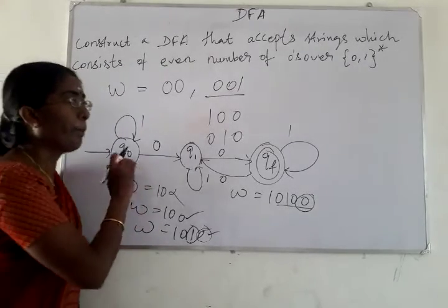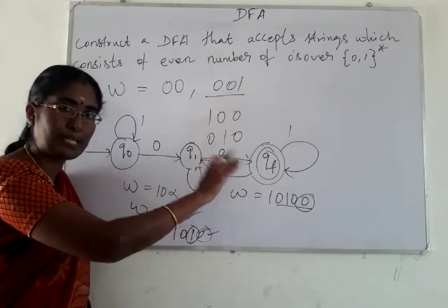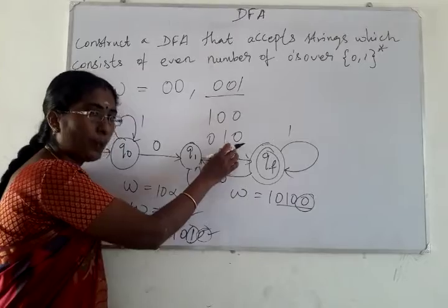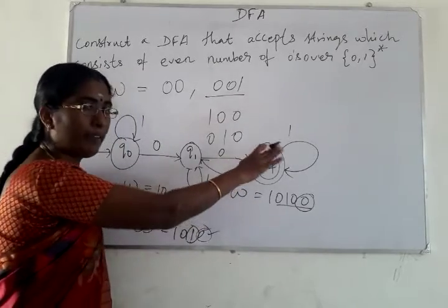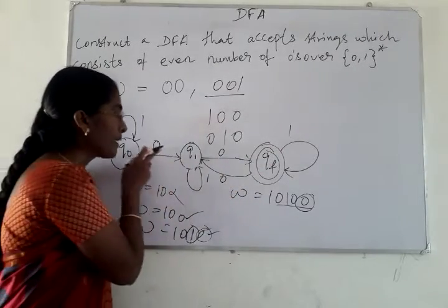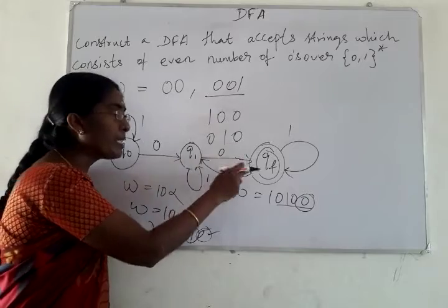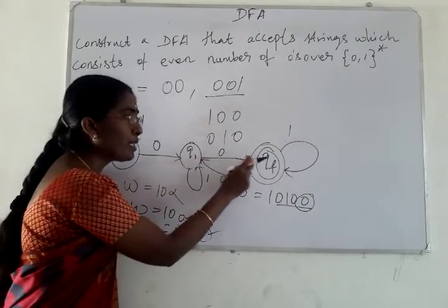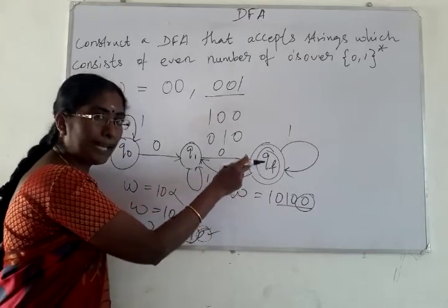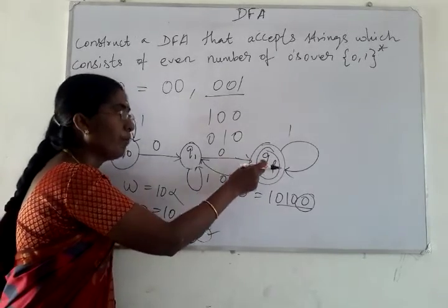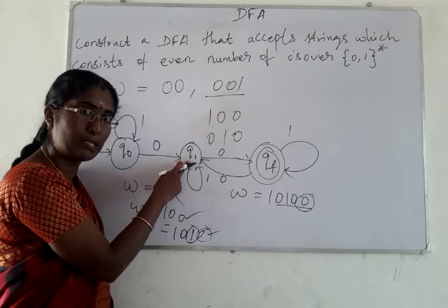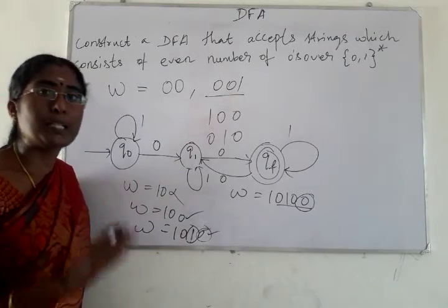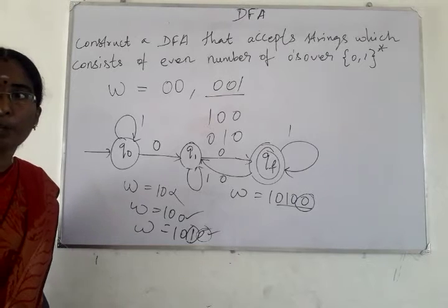The forward path accepts even numbers of zeros: the first zero goes Q0→Q1, the second goes Q1→QF. If a third zero is read, the machine makes a back transition from QF to Q1. A fourth zero returns Q1→QF. A fifth zero again moves away from the final state. This way, the DFA accepts only strings with an even number of zeros.